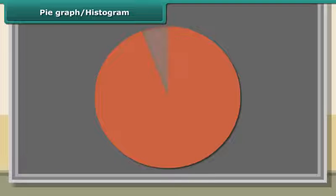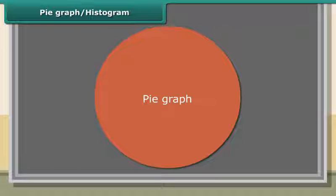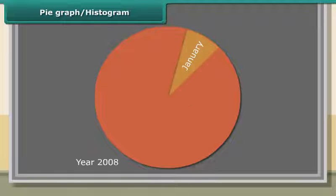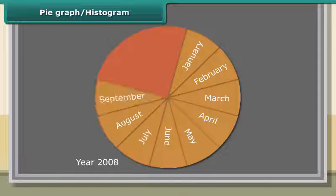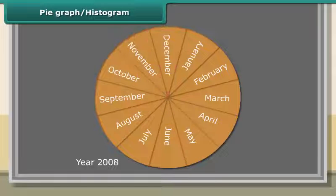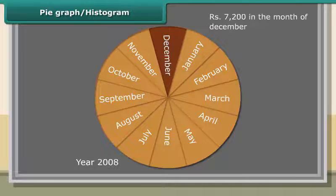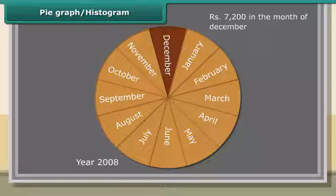A pie graph, or circle graph, is used to compare parts of a whole. The circle represents the whole. As an example, in the month of December 2008, Ramu spends his monthly salary amounting to rupees 7200 on different items.